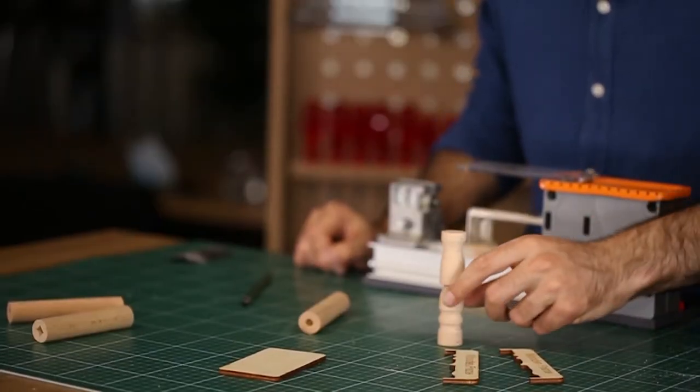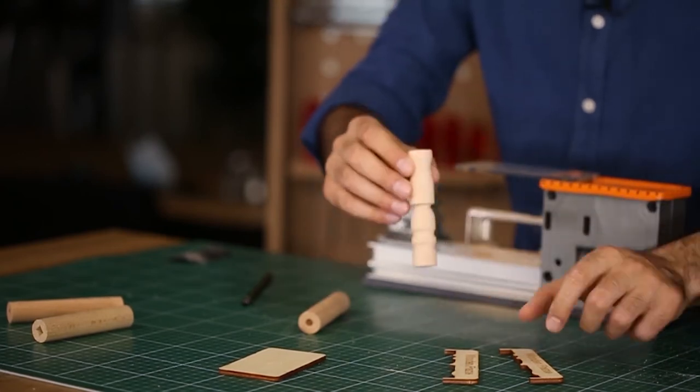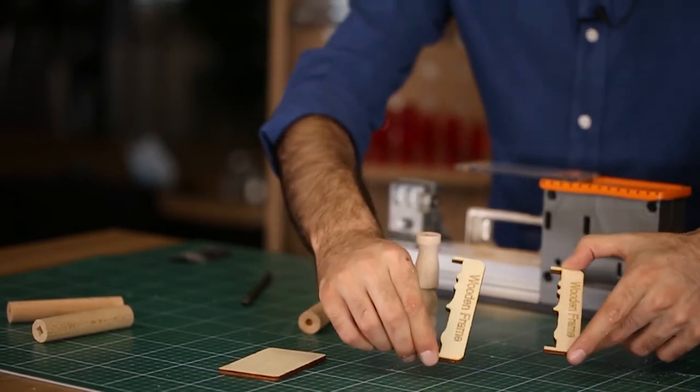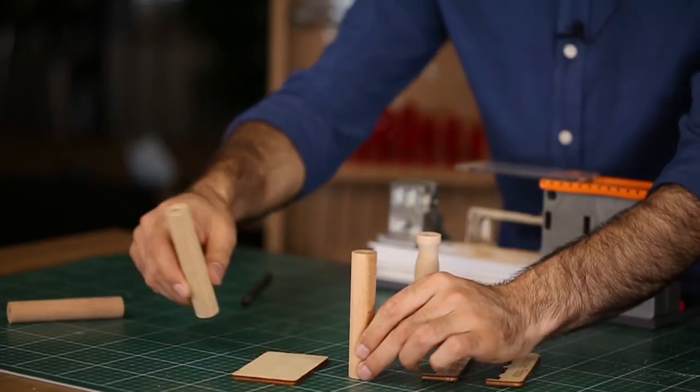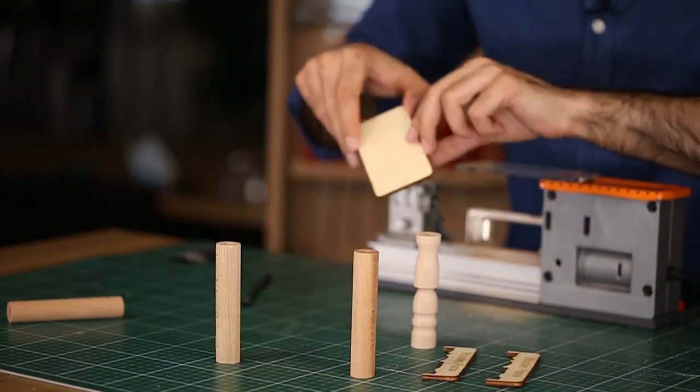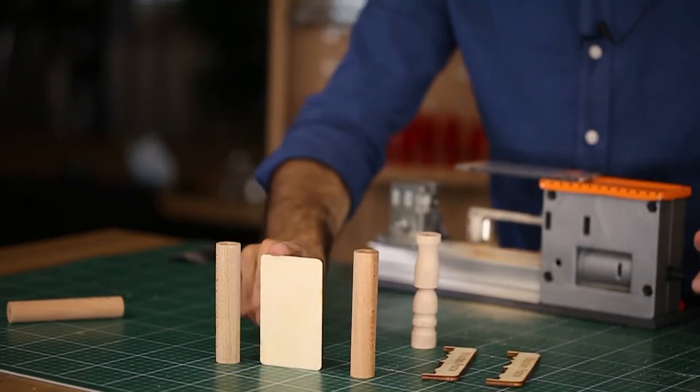Now I'm going to shape one more cylinder the same as this one because these two cylinders have to be the same because this cylinder is going to be the sides of the wooden frame.